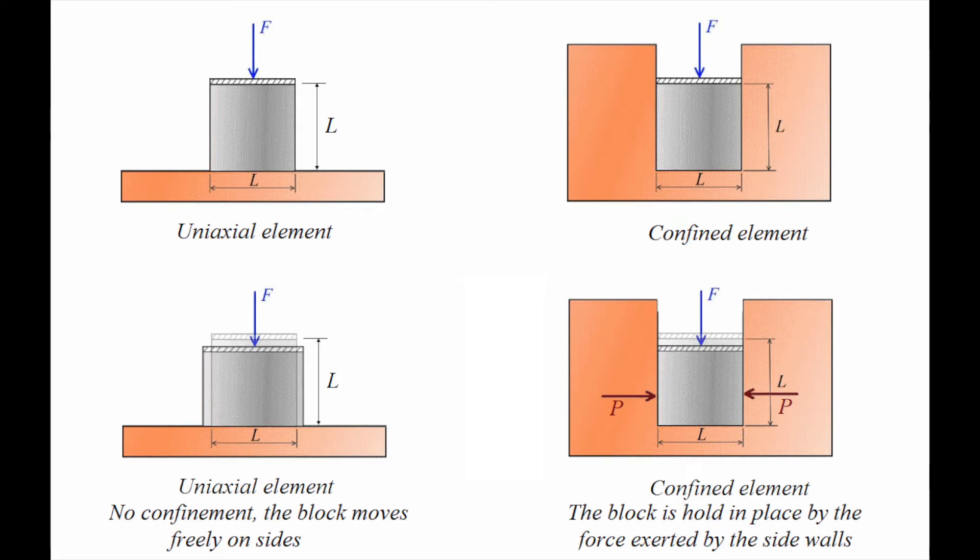But once we have 0 Poisson's ratio, what does it mean? It means that this block is going to move downward but there is no lateral strain on the element and that is going to just stay where it was before. In that case, do we need to have any side stresses to hold it in a position?